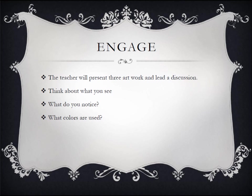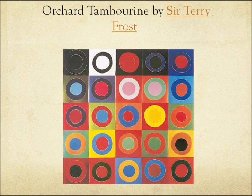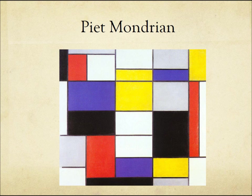For the engagement portion of my lesson, I showed the students three pieces of art and told them to take two to three minutes observing the art. After they observed for a couple minutes, I asked them some questions: what comes to mind when you look at the art, what do you see, what colors and shapes do you notice, what comes to mind when you look at the painting, is there anything that stands out to you, and does the painting remind you of anything?